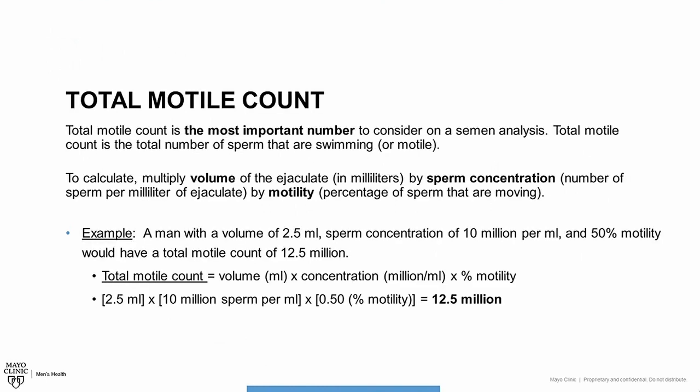Total motile count is the most important number to consider on a semen analysis. It's the total number of sperm that are swimming. Not all labs report this number, but you can calculate it using the other numbers from your report. To calculate this number, multiply the volume of the ejaculate in milliliters by the sperm concentration, then take that number and multiply it by the percent motility. For example, a man with a volume of 2.5 milliliters, sperm concentration of 10 million per milliliter, and 50% motility would have a total motile count of 12.5 million.